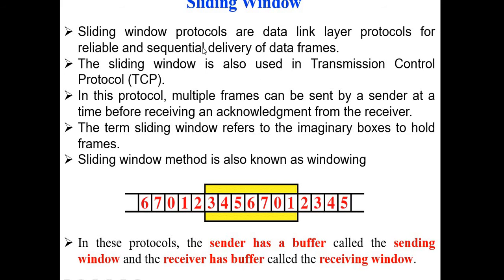So in Go Back N and Selective Repeat ARQ, we have the Sliding Window concept. So the window is like this. In the sender side and the receiver's site, there are buffers to store the frames.